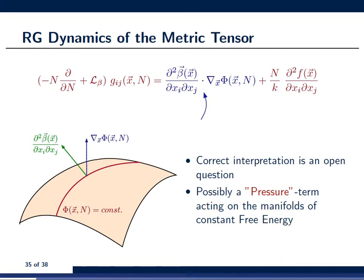But, let's start off with the first term. So, first of all, let's consider submanifolds of constant free energy. Now, what we notice is that the term gradient of phi is always perpendicular on such a manifold of constant free energy.